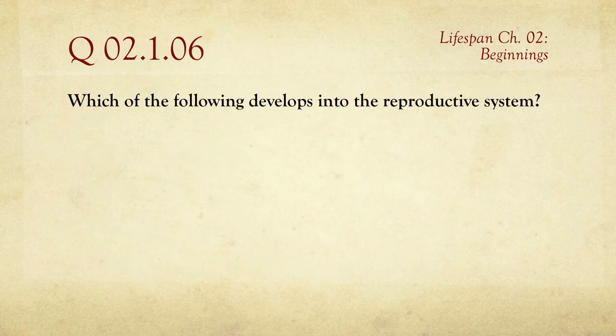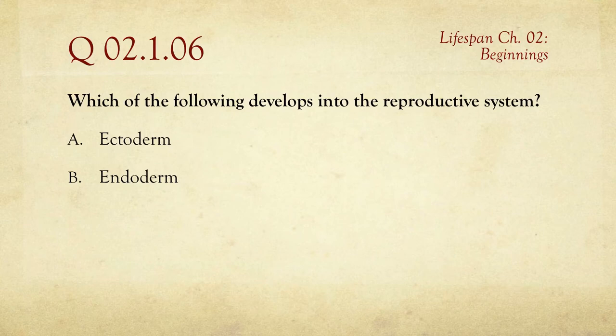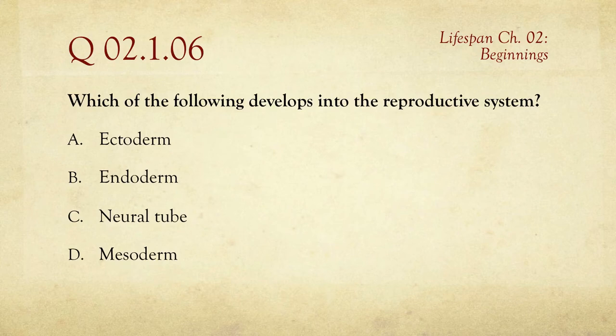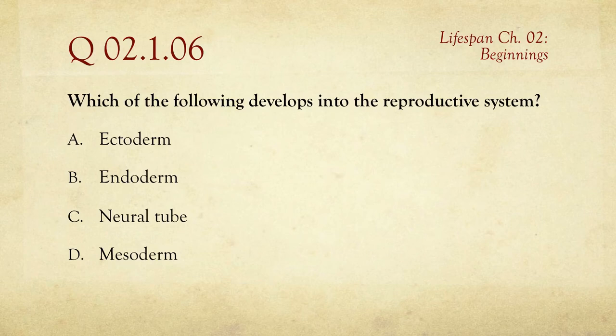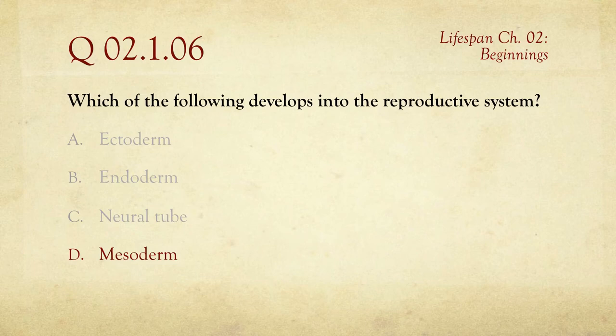Number six: which of the following develops into the reproductive system — the ectoderm, the endoderm, the neural tube, or the mesoderm? The neural tube develops into the brain and spinal cord. The answer is D, the mesoderm — meaning the middle layer — which develops into the reproductive system and some other organs.